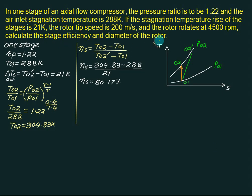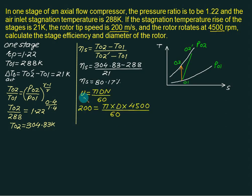For the rotor diameter, we use U = πDN/60. With U = 200 m/s and N = 4500 rpm, solving for D gives D = 0.848 meters, or 84.8 cm.